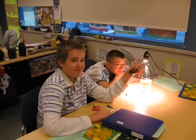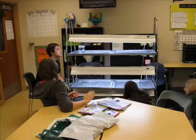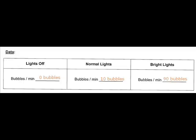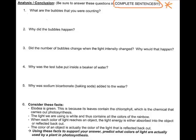Next we used extremely bright lights, such as heat lamps and grow lights as shown in the student pictures, to try to increase the amount of photosynthesis that the plant underwent. In this case we were able to count 90 bubbles for the same amount of time as the first two experiments. Please record this on your data chart under bright light.